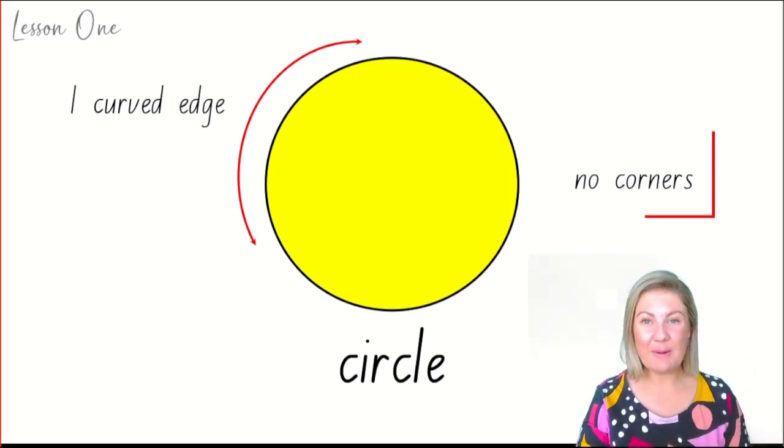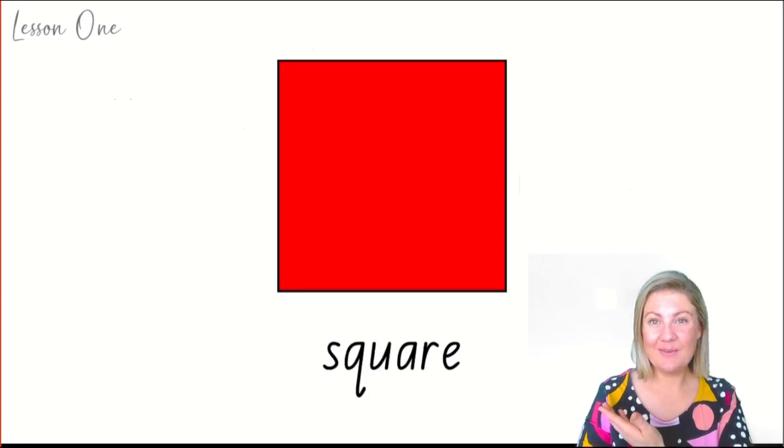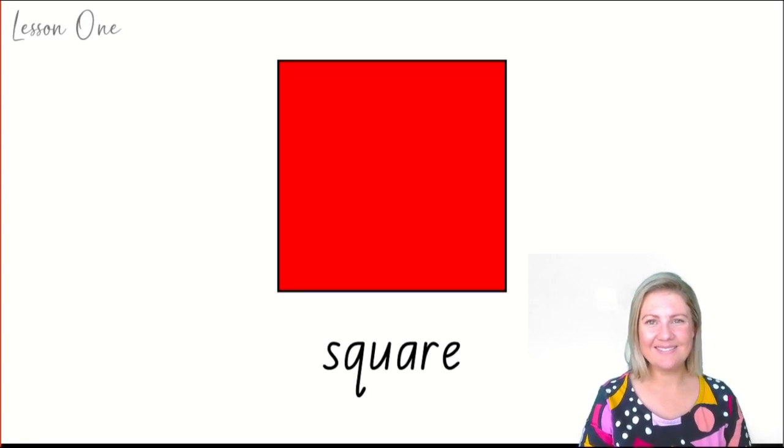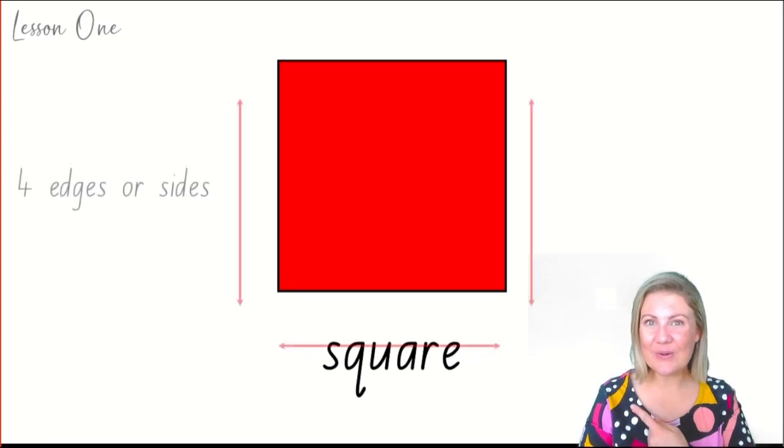Now that we've spoken about a circle, what do you notice about a square? Make some comments and tell somebody nearby what you notice about a square. Well, a square has four edges, four sides.